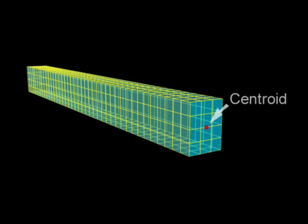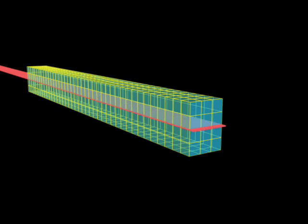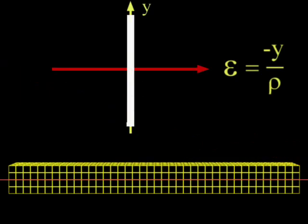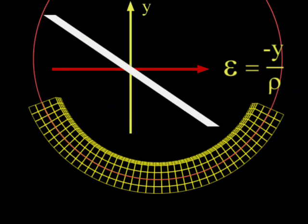For a rectangular beam, the centroid, and thus the neutral axis, is halfway from top to bottom. As a result, the strain distribution is symmetrical.